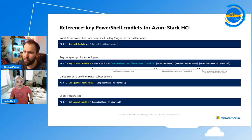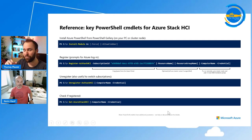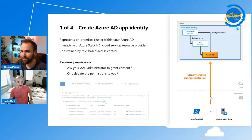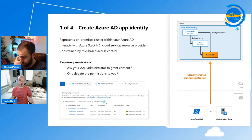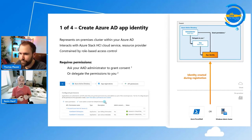This is exactly how you register the machine — what you as a customer would do: get a new Azure Stack HCI, install the nodes, form the cluster, then register it to Azure. Since this is a deep dive, we want to know what's happening in the backend. There are four main things. The first one is: when we register, we create what we call the Azure AD app identity. This is an object that represents the cluster within your Azure Active Directory.